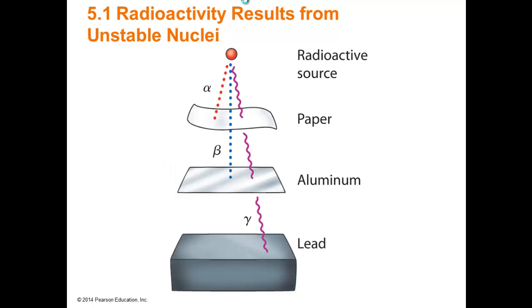If you want to get hit by any type of radiation, you want it to be alpha — it is the least energetic and won't even pass through paper. If you're wearing clothing, it will protect you from alpha radiation. Beta particles, unless your clothing is aluminum, will go right through it. However, beta won't penetrate as deeply as gamma particles will. If you got hit by all three, alpha would stop at your clothing, beta would go into your skin, and gamma radiation would penetrate all the way to your bone.